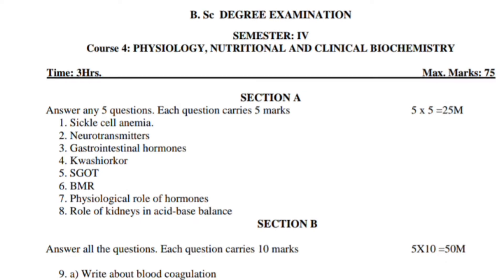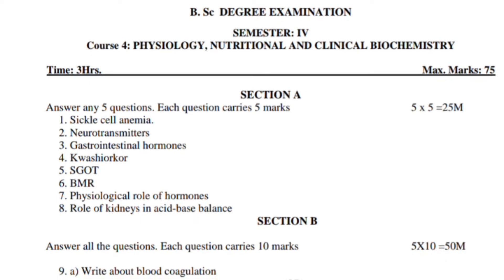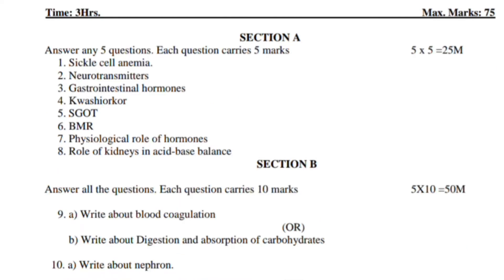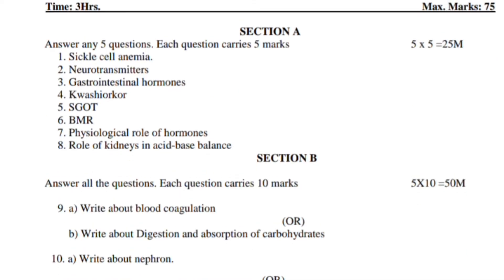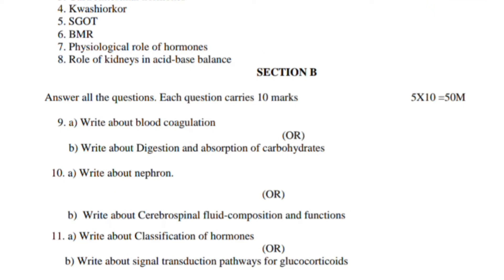And then Section B — answer all the questions; each question carries 10 marks. Question 9: write about blood coagulation. Question 9 (alternative): write about digestion and absorption of carbohydrates. Question 10: write about the nephron. Question 10 (alternative): write about cerebrospinal fluid composition and functions.